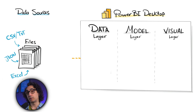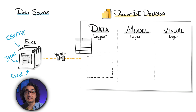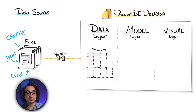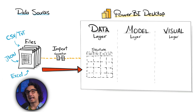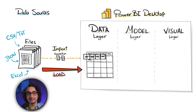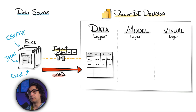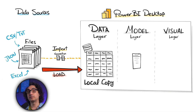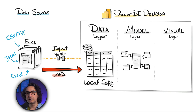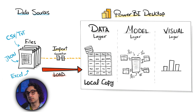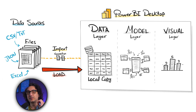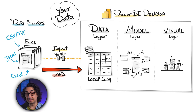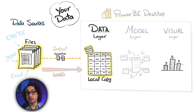You tell Power BI to connect to your files and load them. Power BI establishes a connection, reads the structure - the columns, the data types - then starts extracting and pulling the data out of the files and copies the whole thing inside the data layer inside Power BI. Power BI stores a full copy of your data locally inside the Power BI file. After that you build the data model to organize your data, and finally build the visuals on top of it.